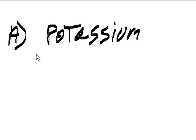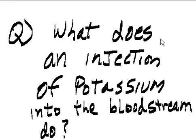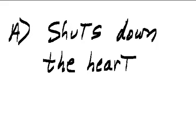Question: Doctors who commit suicide tend to use what? Answer: Potassium. Question: What does an injection of potassium into the bloodstream do? Answer: It shuts down the heart.